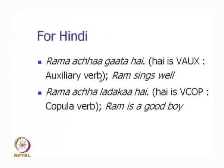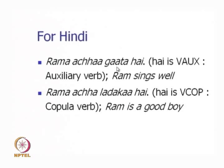Let us describe ambiguity in a bit more detail with two Hindi examples. In 'Ram accha gaata hai,' hai is an auxiliary verb with the tag VOX, and the meaning of the sentence is 'Ram sings well.' Here, 'accha' is a qualifier for the verb and therefore it is an adverb.